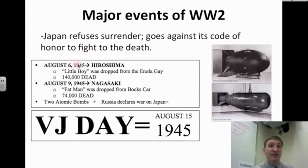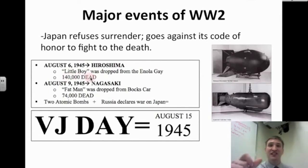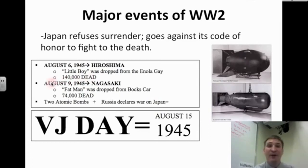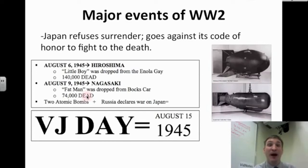On August 6th, 1945, the atomic bomb called 'Little Boy' is dropped from a plane called the Enola Gay onto the Japanese city of Hiroshima. 140,000 Japanese die — some instantly, vaporized into thin air. But Japan still does not surrender. So three days later, on August 9th, the U.S. drops a second atomic bomb called 'Fat Man,' dropped from a plane called Boxcar, onto the city of Nagasaki. 74,000 Japanese die. Russia also declares war on Japan.